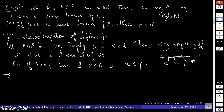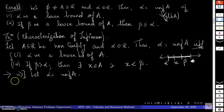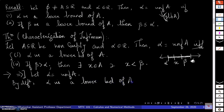This is an if-and-only-if statement. The P part is 'alpha is the infimum of A' and the Q part is the two conditions. For the forward direction, let alpha be the infimum of A. Then by definition, alpha is the lower bound of A, and if beta is any other lower bound, then beta is less than or equal to alpha. The first condition — alpha is a lower bound of A — follows directly by the definition of infimum.